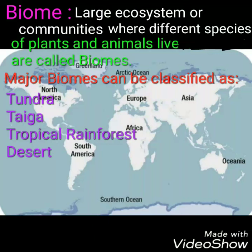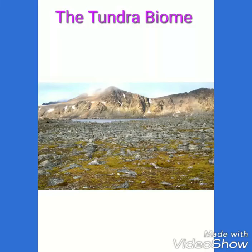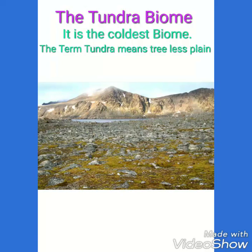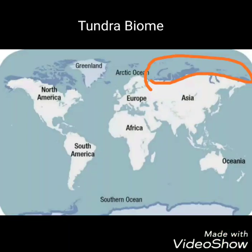The major biomes can be classified as tundra, taiga, tropical rainforest, desert, savannah, temperate grassland, and temperate deciduous forest. Now, what is the tundra biome? The tundra biome is the coldest biome, and the term tundra means tree-less plain or marshy land. It lies in the northern part of the taiga biome and includes the northern lands of Asia, Europe, North America, and Greenland.